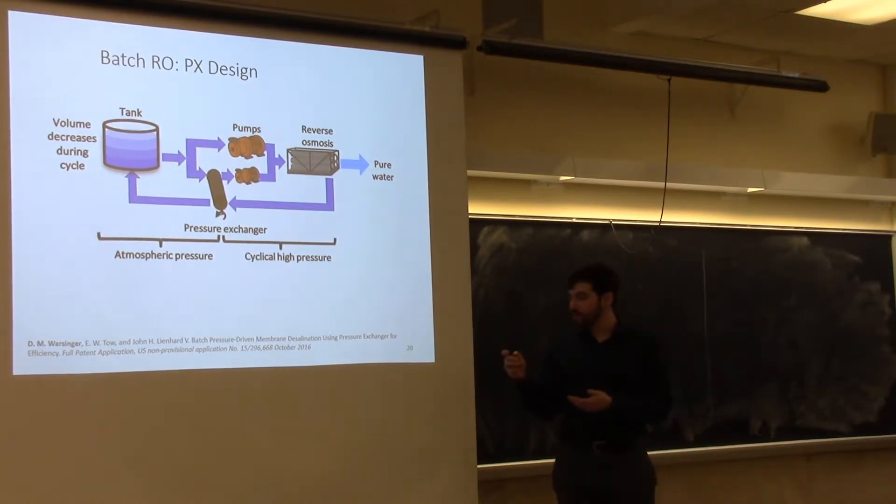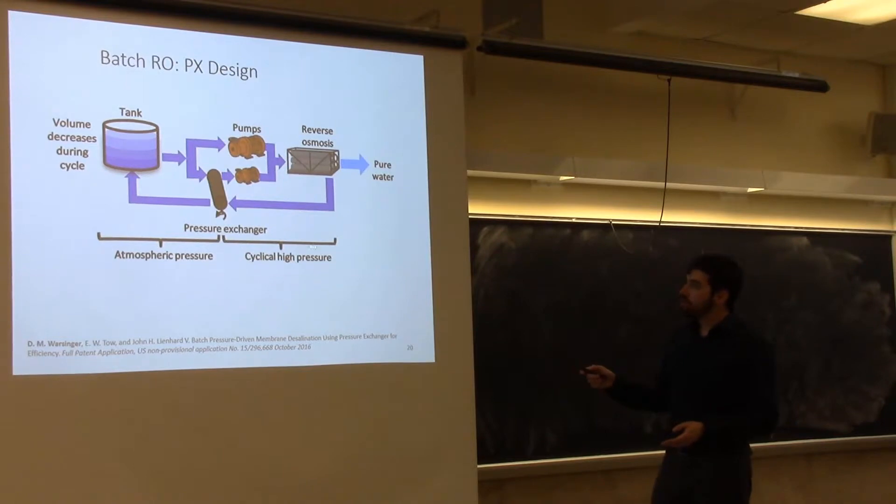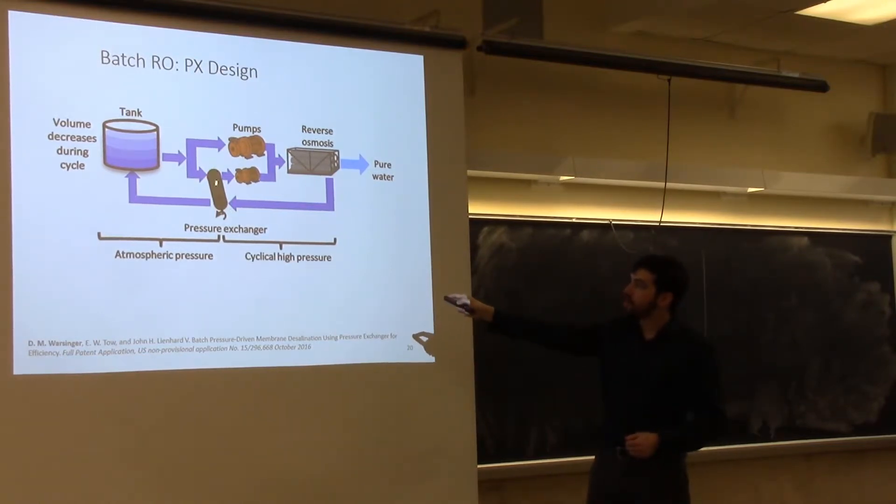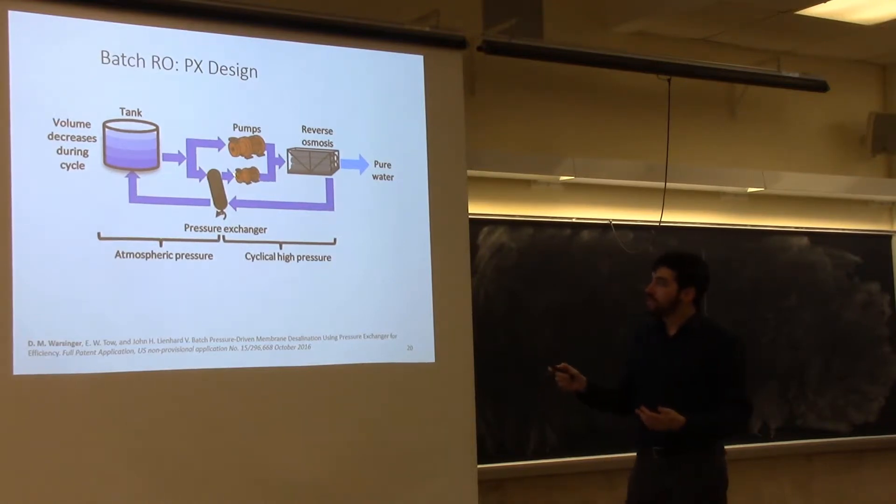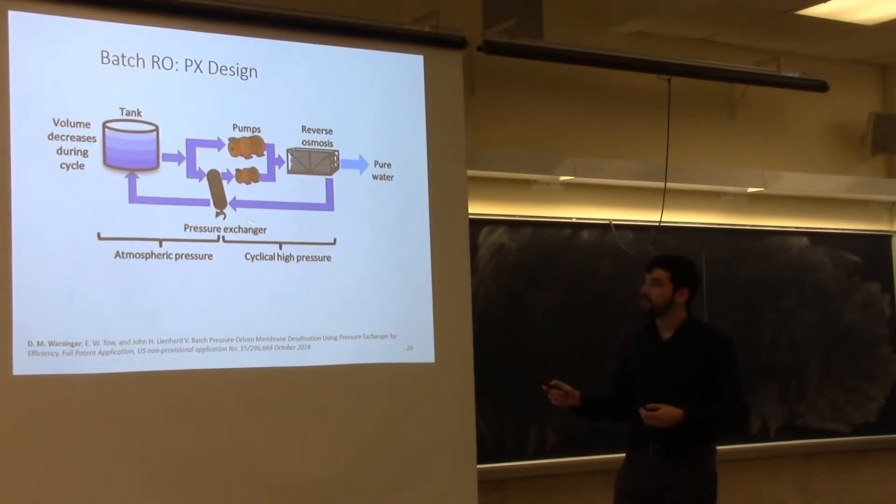Here, we have another batch configuration, and we've proposed actually using it to enable this tank to be at low pressure. In this alternative design, we have one fraction of the system that's at cyclical high pressure, and another fraction that's at atmospheric pressure. Once the feed leaves the system, all the energy is recovered into feed coming into the system, and then the concentrated volume is being set to this variable pressure, variable volume tank that is at atmospheric pressure. This design lets us get rid of any complications that could arise with a high-pressure tank.